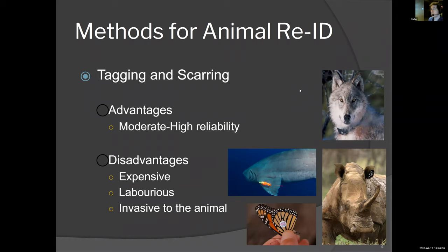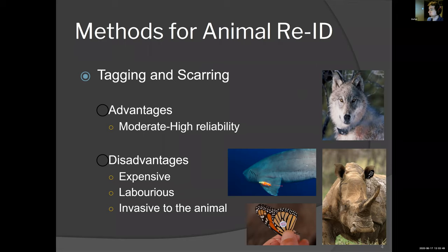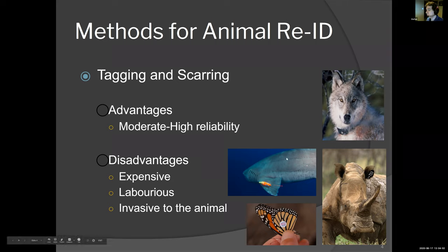Traditionally, methods for animal re-ID are done through tagging and scarring, and we do this because it works — it has moderate to high reliability. We'll capture individuals, put a collar on them, an earring, a sticker. But this has numerous disadvantages including that it's expensive, it's laborious, and it's ultimately invasive to the animal. We know that the pattern on a monarch butterfly is responsible for sexual selection, so if we're slapping a sticker on the side of it, what is that actually doing to the creature?